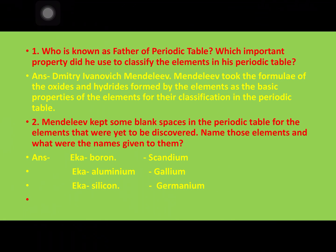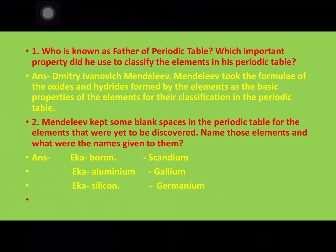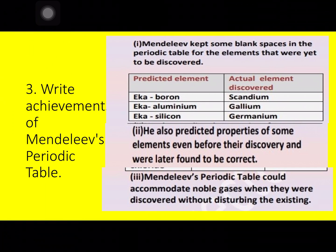Now let's see the question answers. Who is known as the father of the periodic table? It's Dmitri Ivanovich Mendeleev. He took the formula of oxides and hydrides formed by elements as the basic property for classification in the periodic table. Mendeleev kept some blank spaces in the periodic table for elements yet to be discovered. Those elements were: Eka-boron replaced by Scandium, Eka-aluminium replaced by Gallium, and Eka-silicon replaced by Germanium.